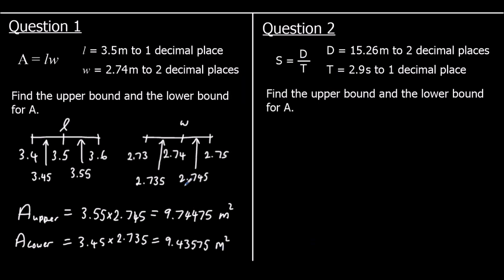Because the inputs to the calculation were rounded, the answer — the area — has a range of possible values. The actual area is somewhere between 9.43575 and 9.74475. The lowest possible value is the lower bound and the biggest possible value is the upper bound.